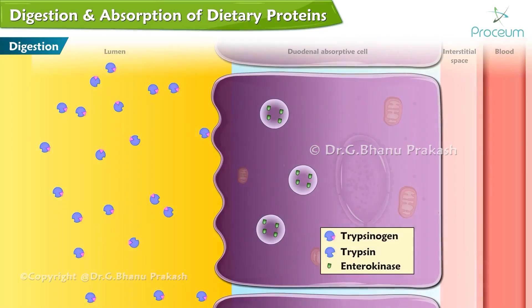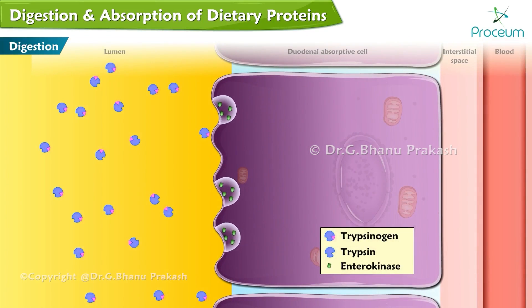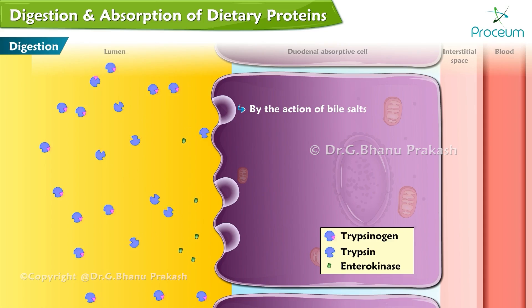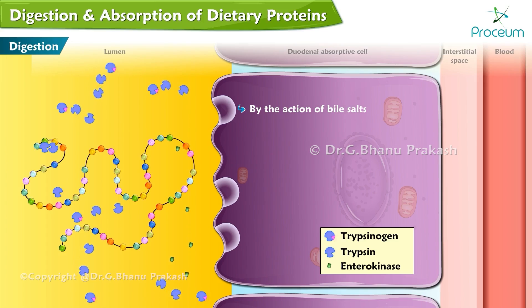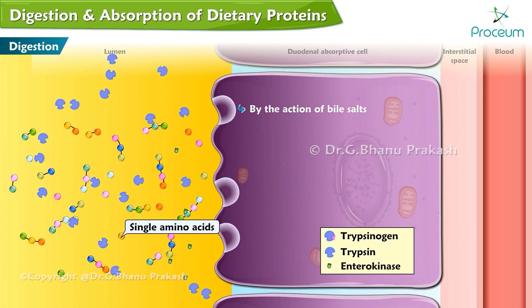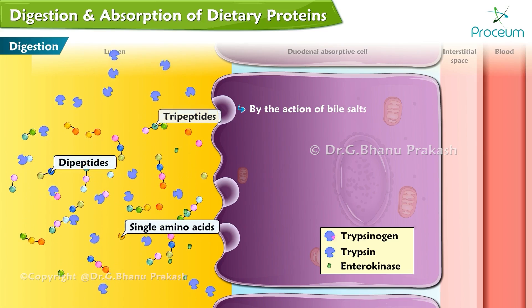Central to this process is enterokinase, which is released from the microvillus membrane of duodenal absorptive cells by the action of bile salts. Enterokinase converts trypsinogen to trypsin, which then catalyzes the conversion of all other pancreatic proteases to their active forms, as well as autocatalyzing the activation of additional trypsinogen. The end result is a mixture of single amino acids, dipeptides, and tripeptides.